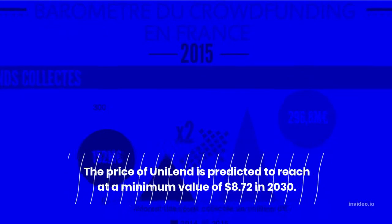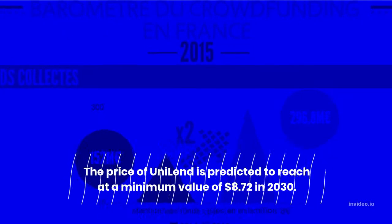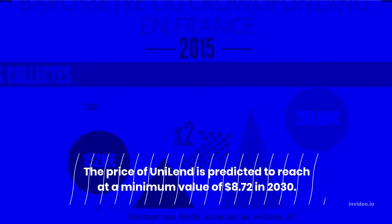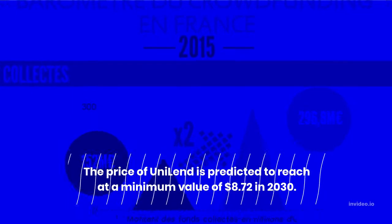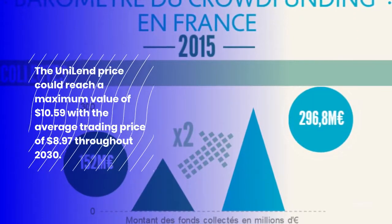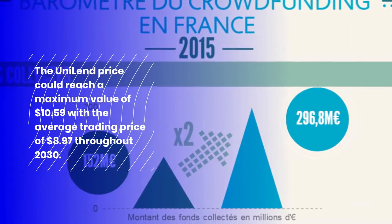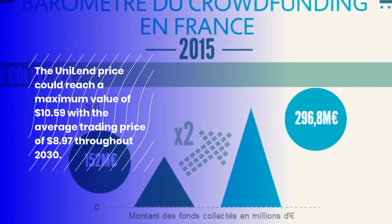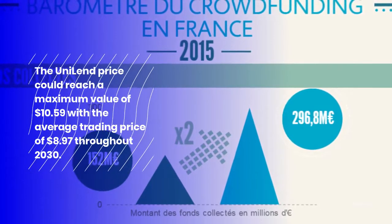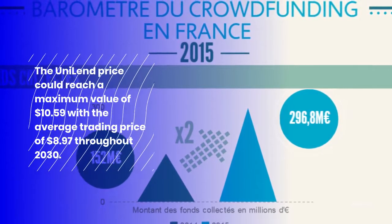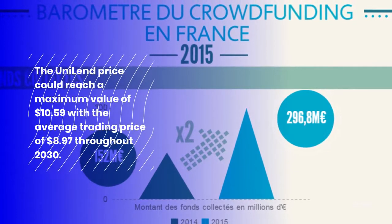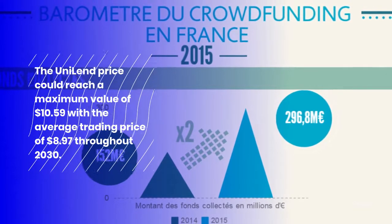Uniland Price Prediction 2030: The price of Uniland is predicted to reach a minimum value of $8.72 in 2030. The Uniland price could reach a maximum value of $10.59 with the average trading price of $8.97 throughout 2030.